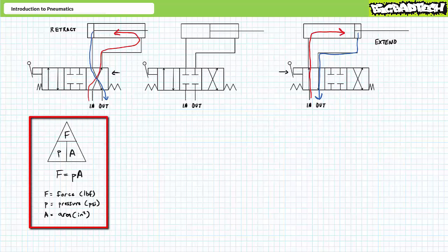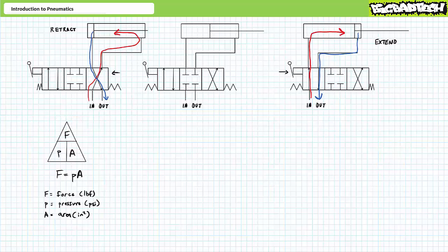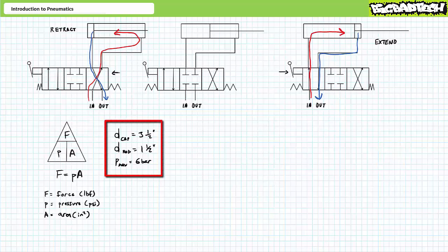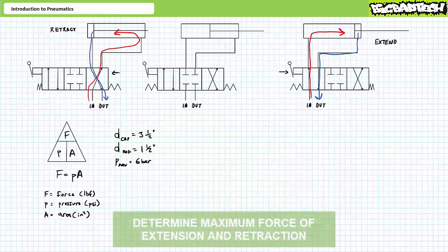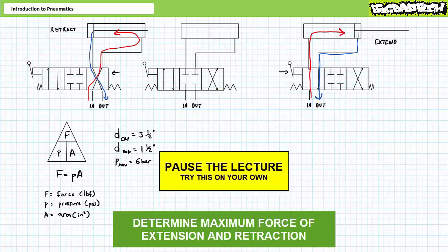Next, Pascal's law states that force is equal to pressure times area. Increased pressure on a large surface area results in more force. Conversely, decreased pressure on a smaller surface area results in less force. As a quick test of your requisite knowledge, consider a double-acting cylinder with a cap diameter of three and a half inches and a rod diameter of an inch and a half. The maximum pressure this system is capable of exerting is six bar. See if you can determine the maximum extension force and the maximum retraction force of this cylinder. By all means, pause the lecture and try this on your own.